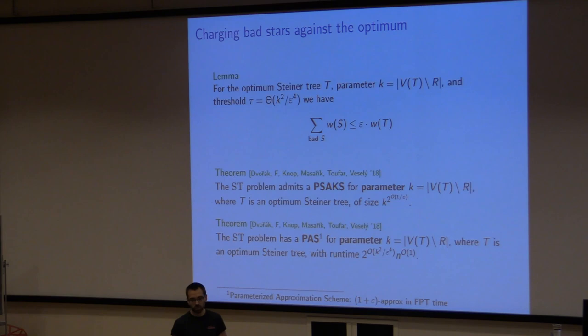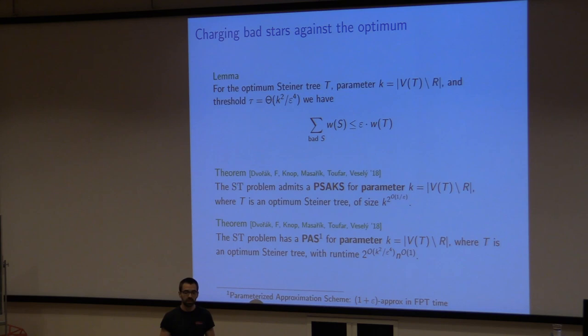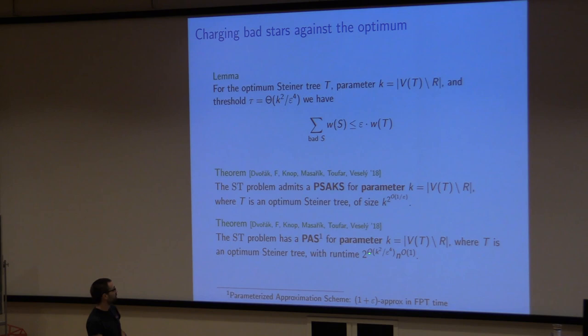This pre-processing — contracting min-ratio stars — can also be used with an FPT algorithm on the remaining graph (parameterized by number of terminals) to get a parameterized approximation scheme, with a running time that essentially equals the threshold of terminals left after reduction times the FPT running time.